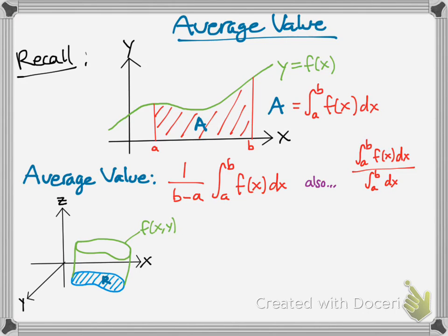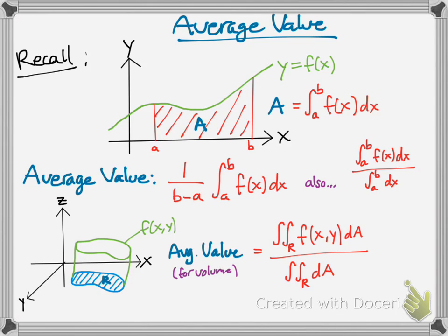So, now we have this three-dimensional object. We want to find the average value for volume. And we have this formula as a result. So, you have the double integral, which would be the volume of this figure here, over the double integral of the area of that region R down there in blue. So, that's kind of the same thing.